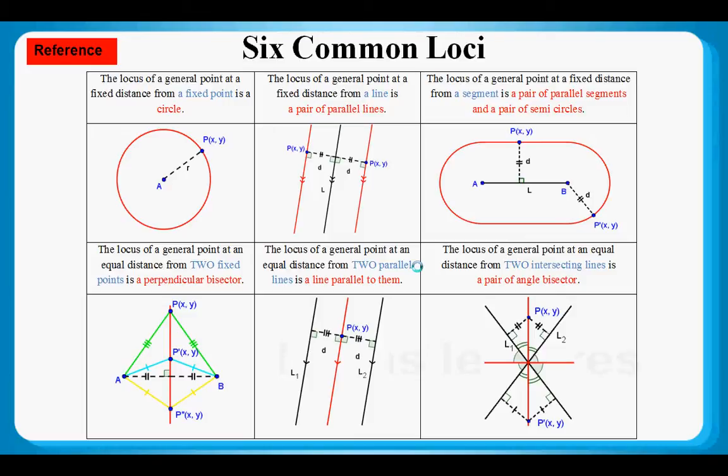What about a general point and two fixed points, and this general point is at an equal distance? Then, the locus would be a perpendicular bisector. From two parallel lines, it's a line parallel to them. From two intersecting lines, the locus would be a pair of angle bisectors.